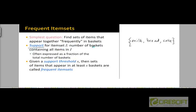Support is just the number of baskets which contain all the items. The support is sometimes expressed as an integer — the frequency or number of transactions containing those items — but it can also be expressed as a fraction or percentage of the total number of transactions. A frequent item set is an item set whose support is higher than some threshold S. Item sets having a support larger than this threshold are called frequent item sets — that is, item sets that appear in at least S transactions.